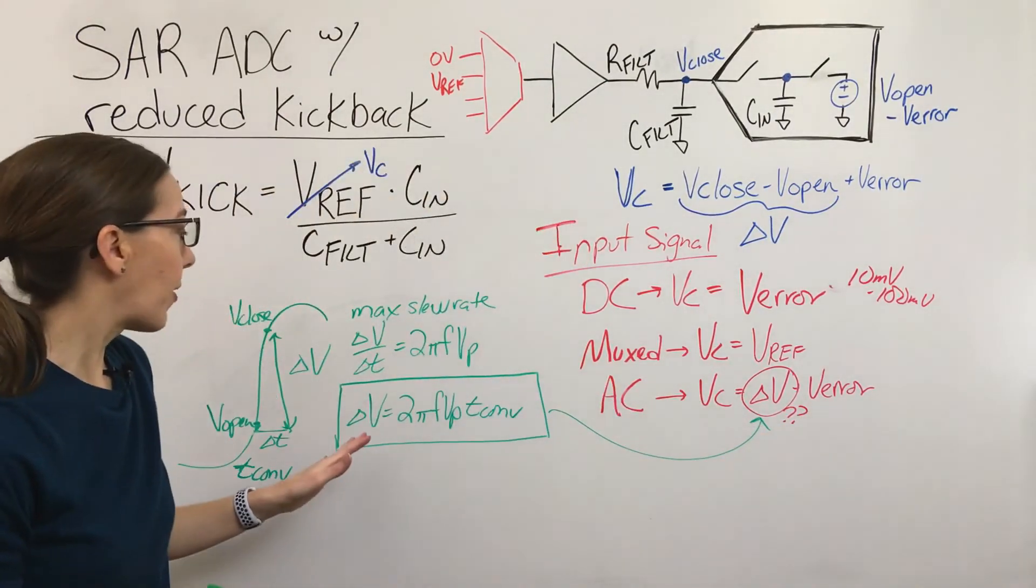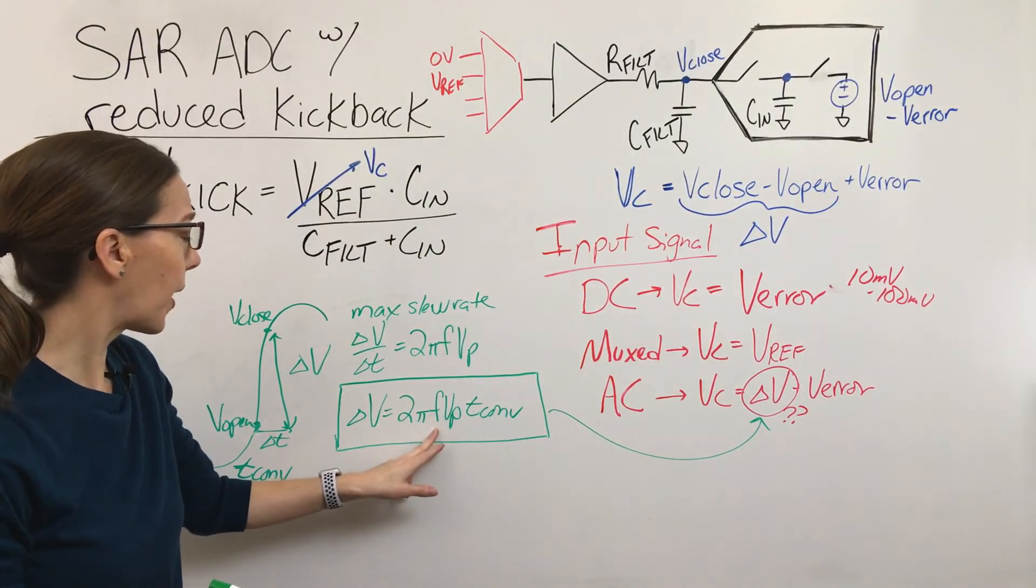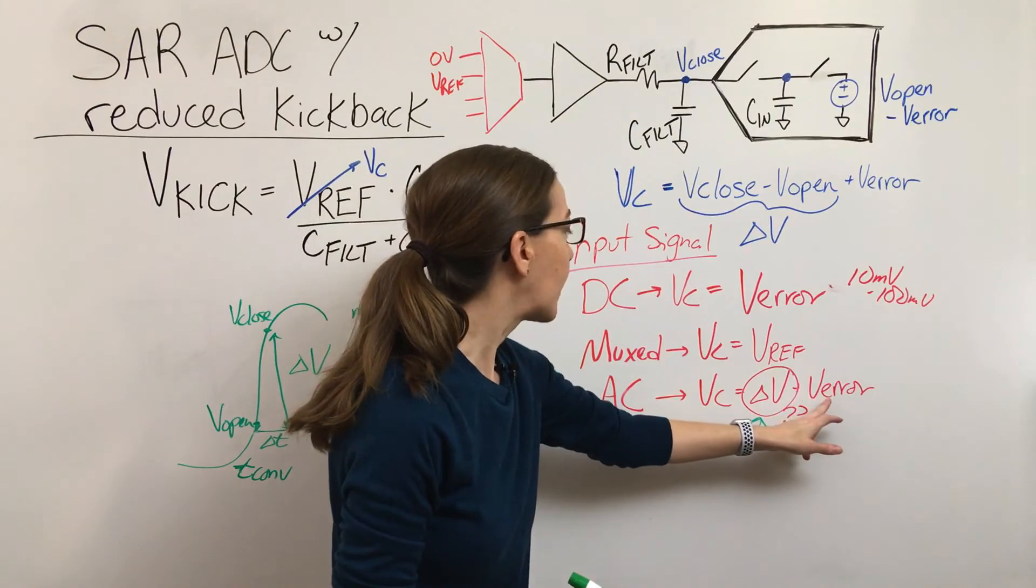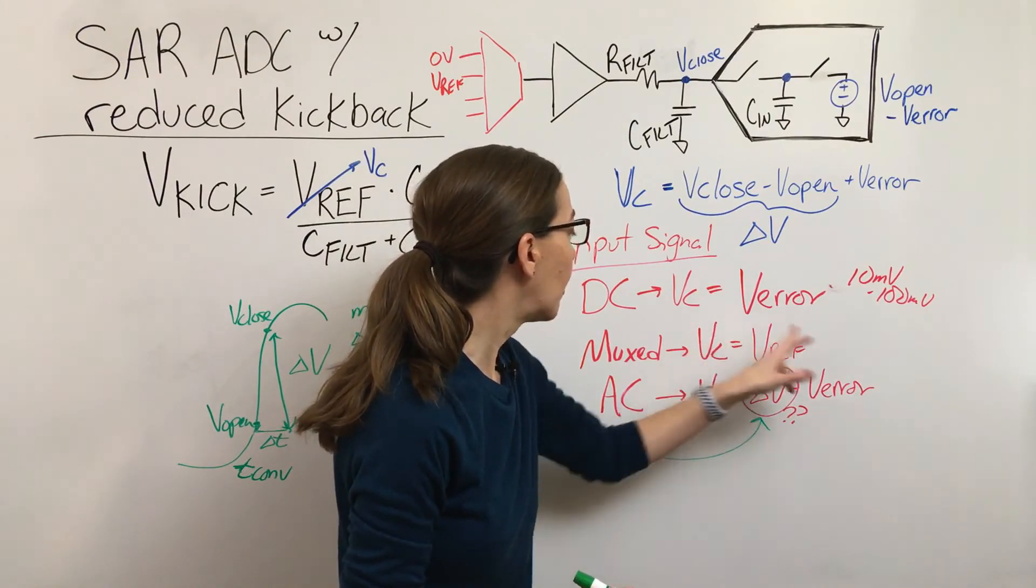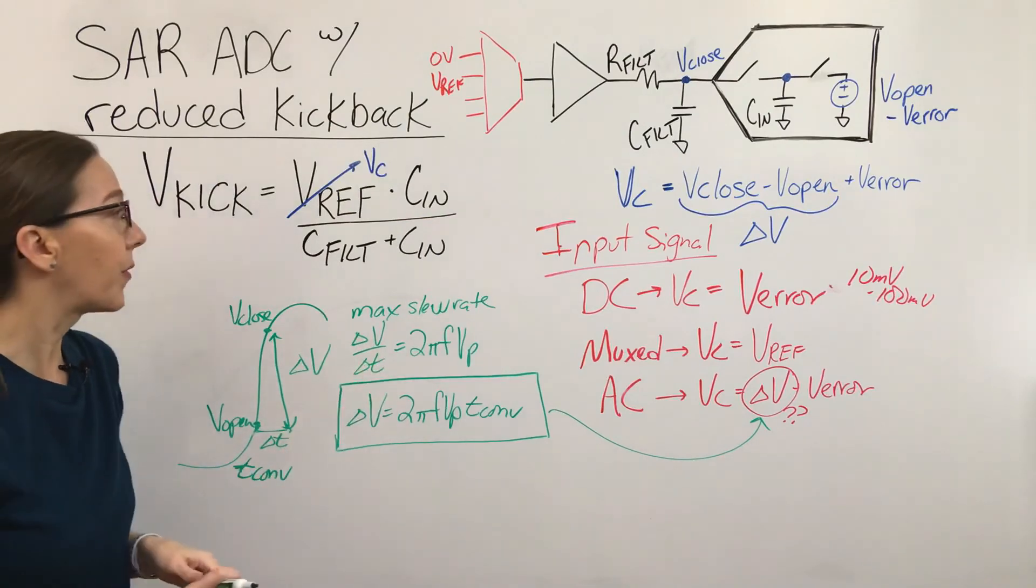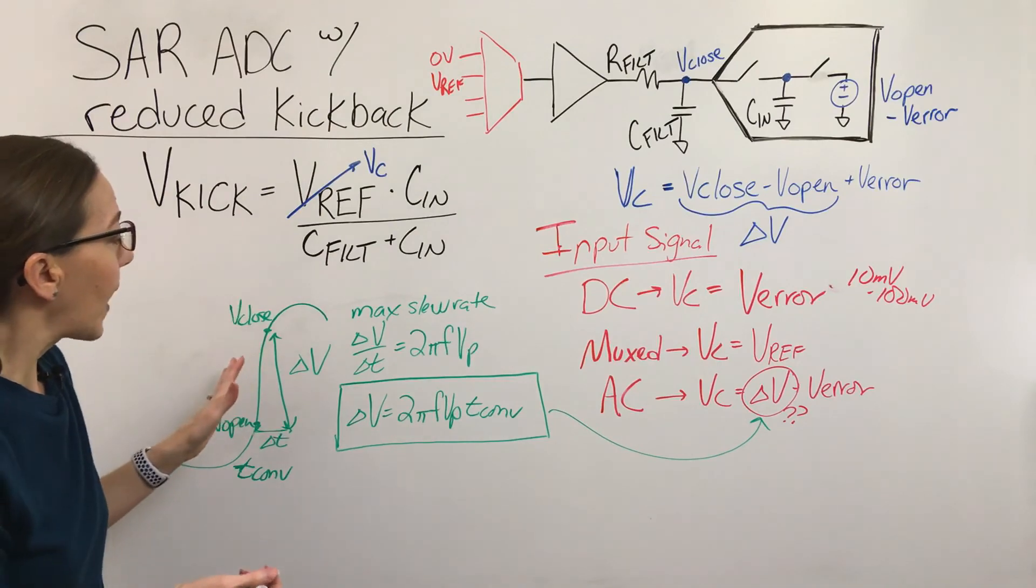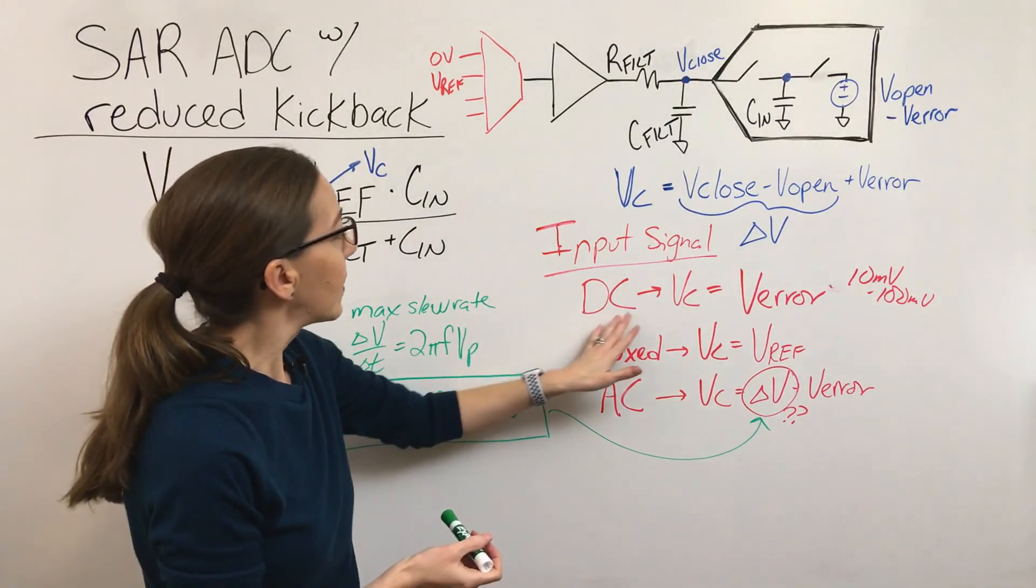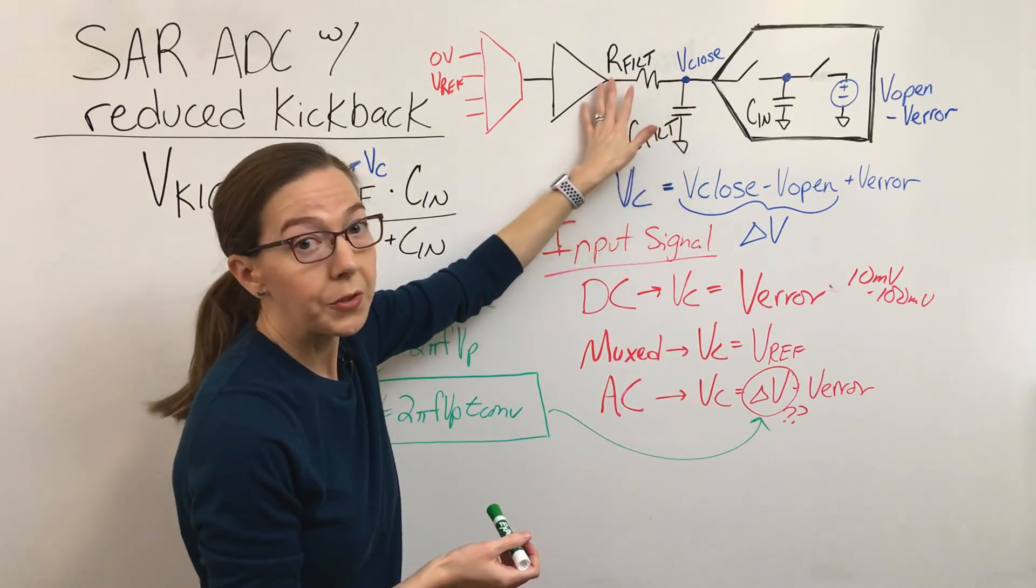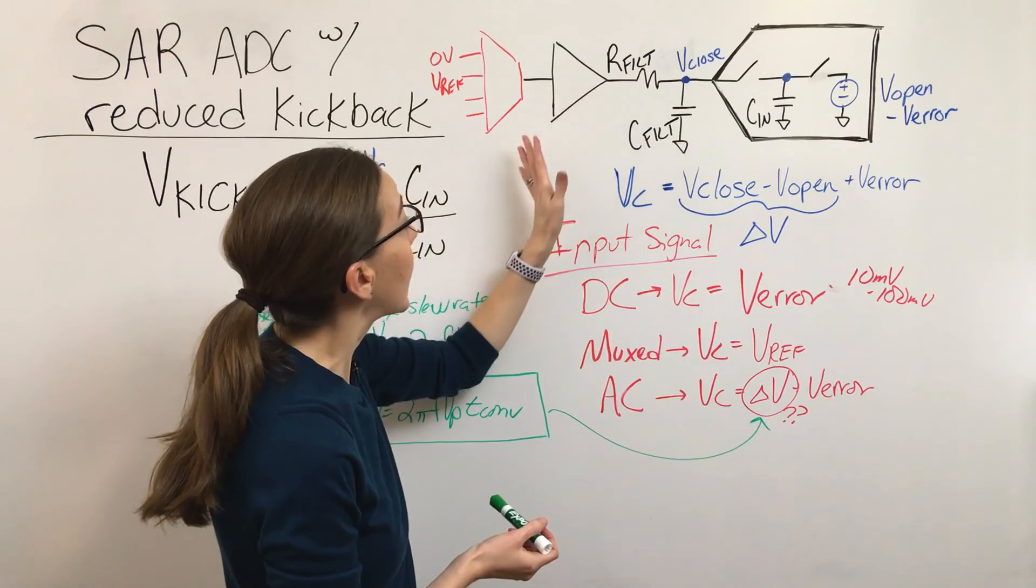And again, it's just a matter of what is the frequency of this AC signal - the larger this frequency is, the larger this delta V is going to be, and the more it might dominate this overall equation. And so what this means if you're looking at this on the bench, if you're actually looking at this circuit put together, what you'll see is you might have a kickback that settles really easily for DC. You might be able to reduce the bandwidth of this RC filter and in that case you can reduce the noise coming in.